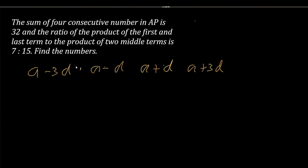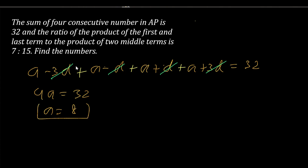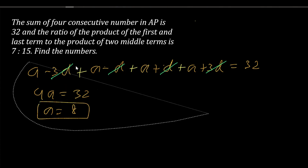If I add these four terms, the d terms cancel out: minus 3d, minus d, plus d, and plus 3d all cancel. So we get 4a = 32, which gives us a = 8. This way we can simplify the working of the question.